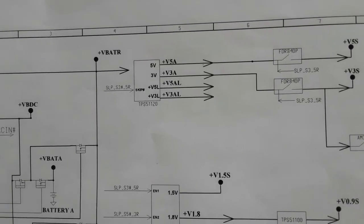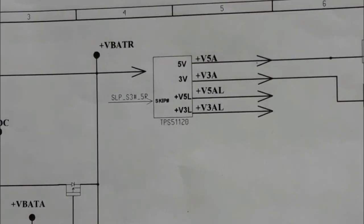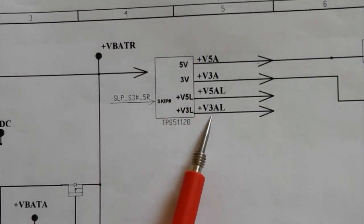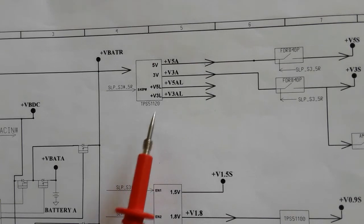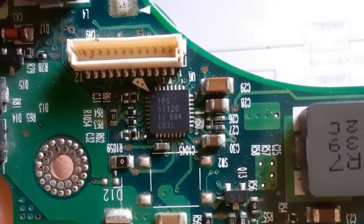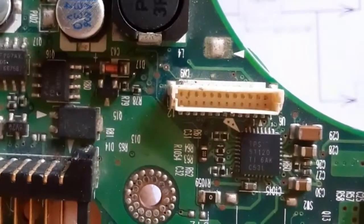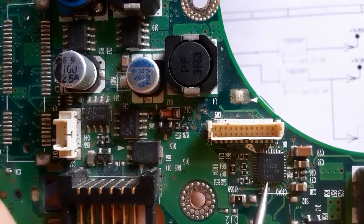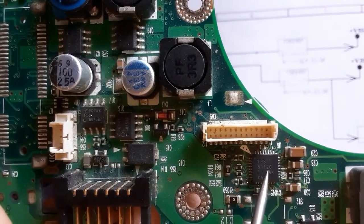Now let's see the next IC, the TPS51120 — the IC that is responsible for generating 3V and 5V. Here we have TPS51120, and this is the IC that is responsible for generating 3V always and 5V always.